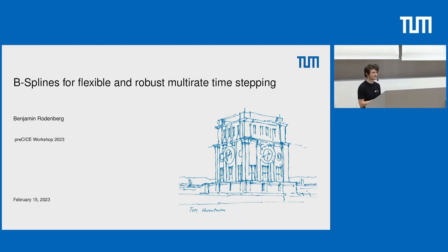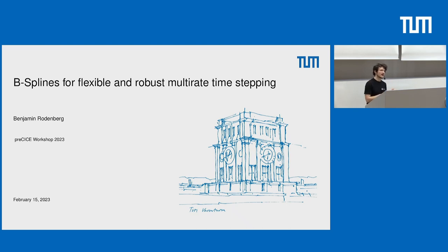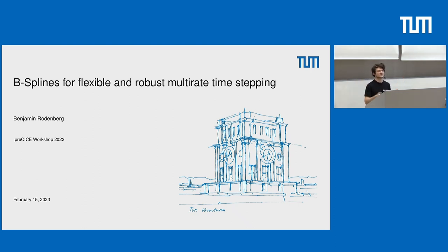Good morning. I'm giving a talk today about how you can use P-splines for flexible and robust multi-rate time-stepping. The main idea is basically how you can connect two solvers that maybe want to use different time-step sizes within your coupling time window, and at the same time you don't want to break the black box assumption, because then you get trouble with preCICE and have to look deep into your solver.